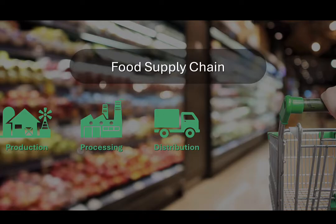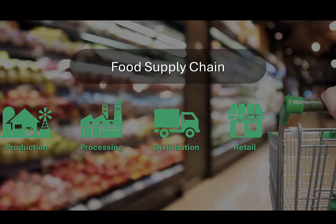Depending upon the foods being transported and the distance traveled, this may be relatively simple, like loading produce onto a truck for sale at a farmers market, or incredibly complex, like flying high-value food products from far-flung regions of the world to high-end restaurants. Next, food is purchased through retail outlets, which can range from restaurants and cafeterias to grocery stores and farmers markets to nearly anything in between. And finally, it reaches the final consumer.